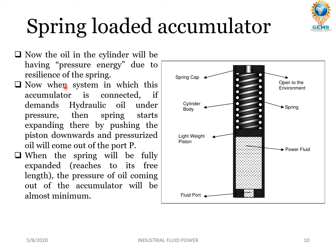When the system demands hydraulic oil under pressure, the spring starts expanding, thereby pushing the piston downwards, and pressurized oil comes out of port P. The hydraulic oil comes down and the piston returns to its initial position. When the spring is fully expanded and reaches its free length, the pressure of the oil coming out of the accumulator will be at almost its minimum value.